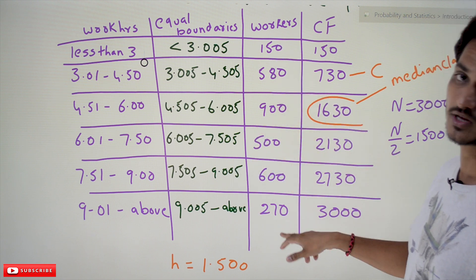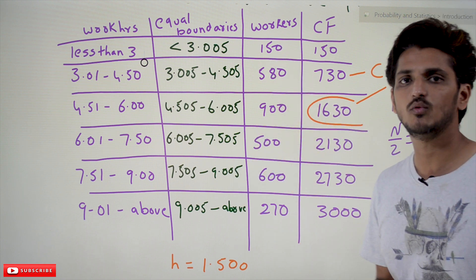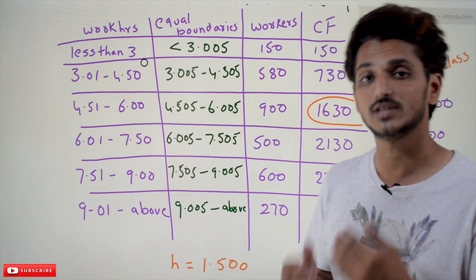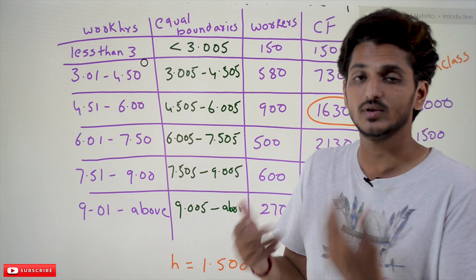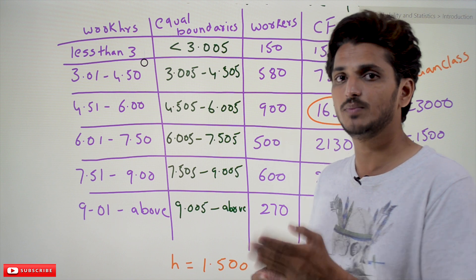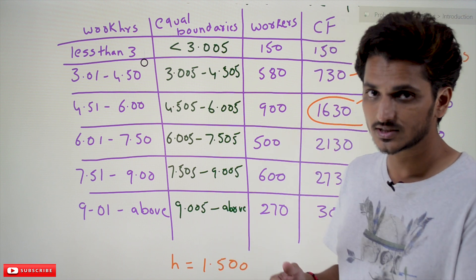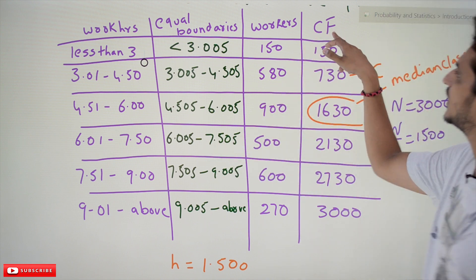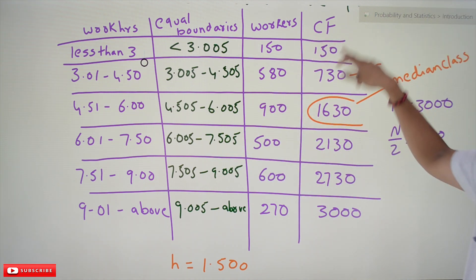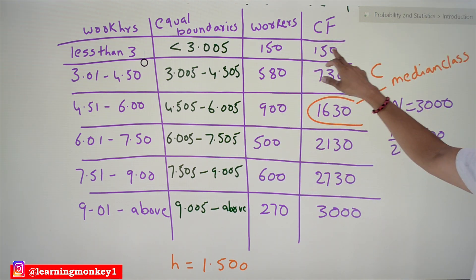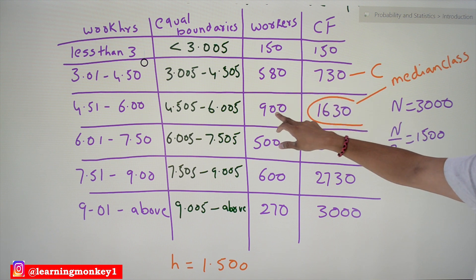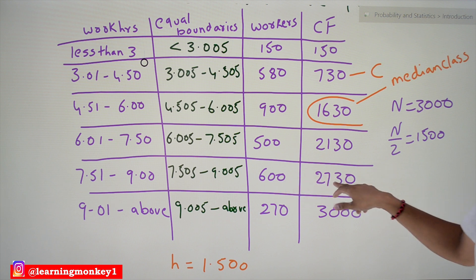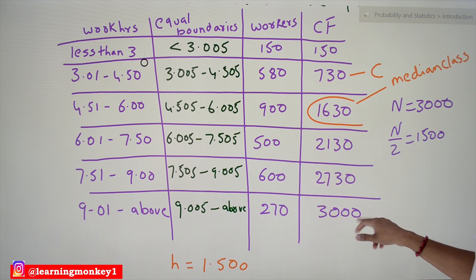These are the number of workers. It is very easy. Now we have to identify the cumulative frequency, then substitute the continuous class into the equation. The cumulative frequencies are: 150, then 150 plus 580 equals 730, then 730 plus 900 equals 1630, then 1630 plus 500 equals 2130, then 2130 plus 627 equals 2757, then up to 3000.